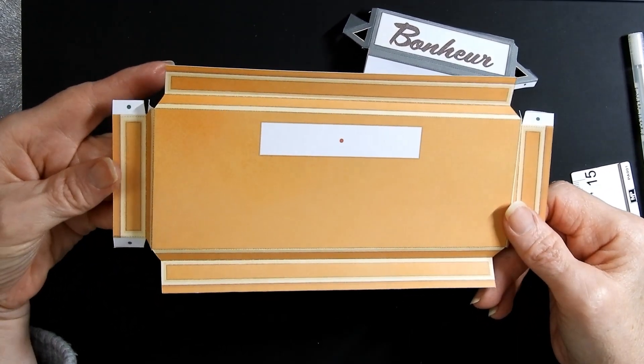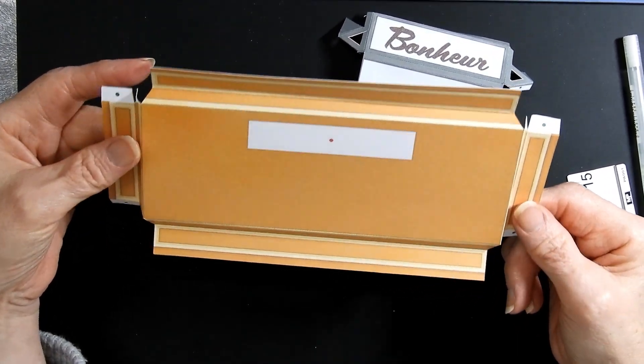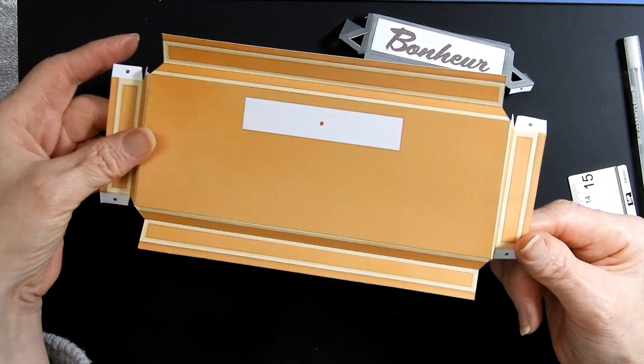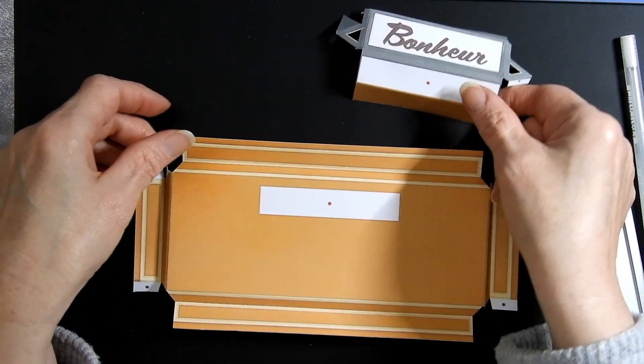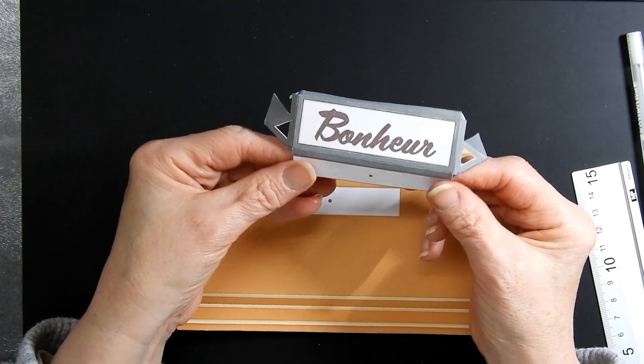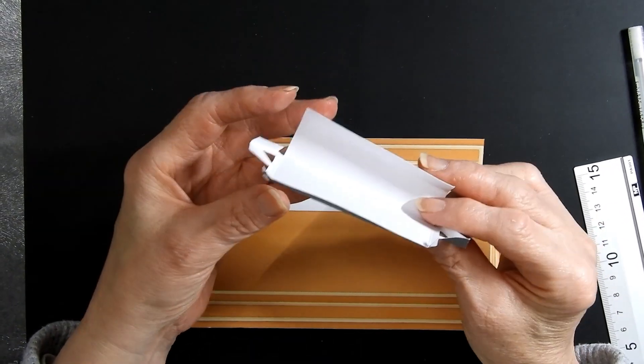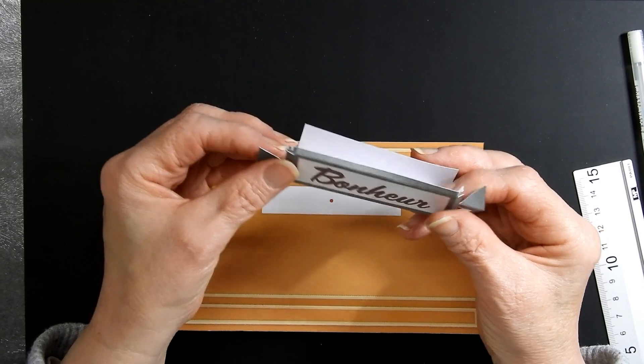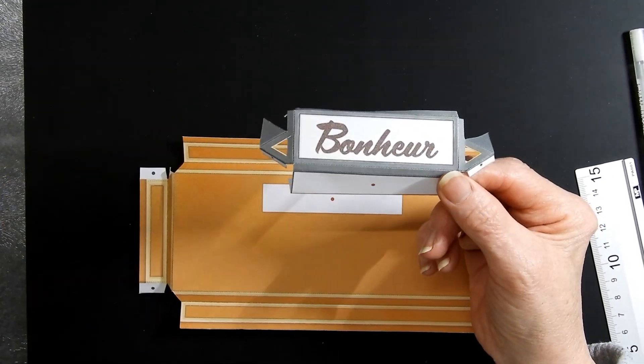The next things to do are the signage and the roof. And both of these are pretty simple to put together. Once you've got all the score lines in place, it becomes pretty evident as to what you've actually got to do. And as I said, they do have diagrams to follow. So I'm just going to glue these together and then see what's next on the list.